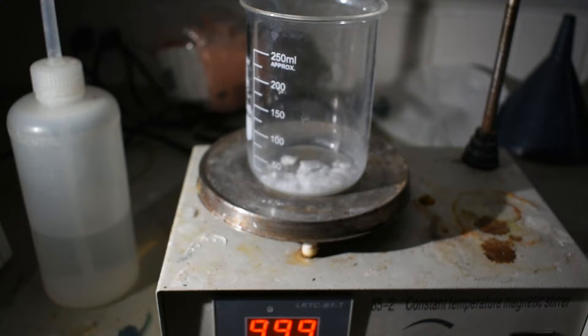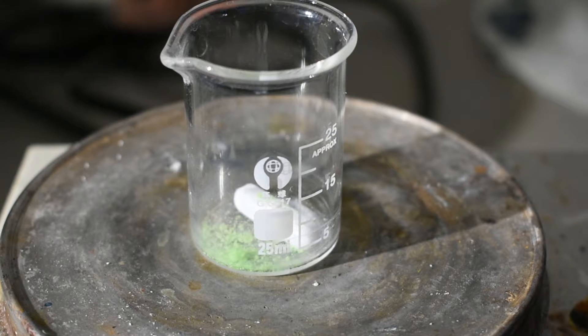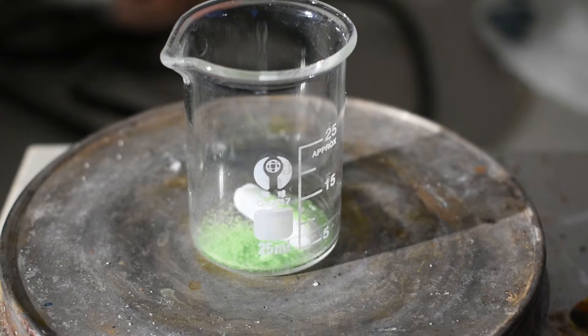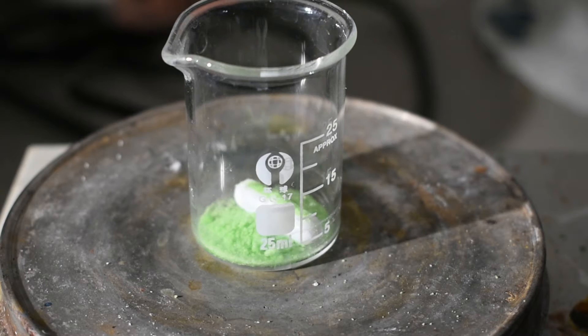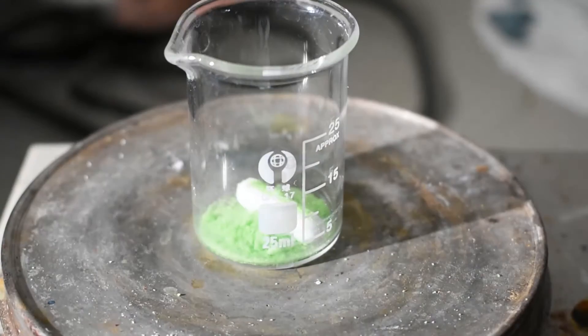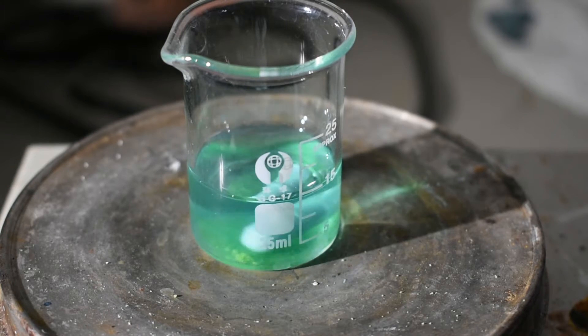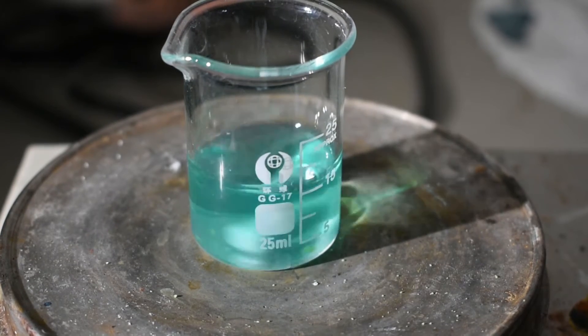So let's get started with the first step, which is dissolving the nickel(II) chloride in some distilled water. I'm just going to add some of the nickel chloride to this 25-milliliter beaker with stir bar. That's probably about enough nickel chloride, and now I'm going to add enough water to dissolve everything. We only need probably about 15 milliliters. It doesn't require much, as it's pretty soluble. And now, it is nearly all dissolved.